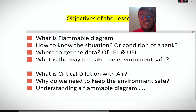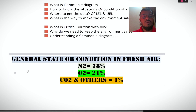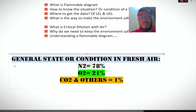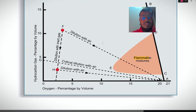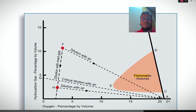We will start with an understanding of the flammable diagram. First, we need to learn the general condition in fresh air — the outside environment. In the open atmosphere we find nitrogen at about 78%, oxygen at about 21%, and the remaining 1% is carbon dioxide and others. Now this is the flammable diagram as per the standard.